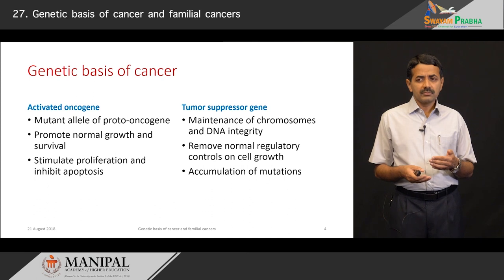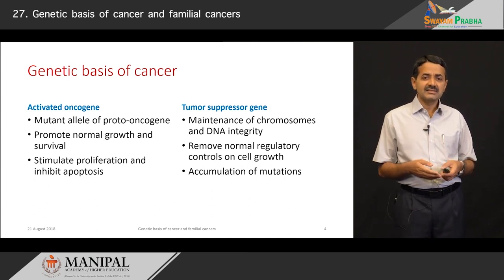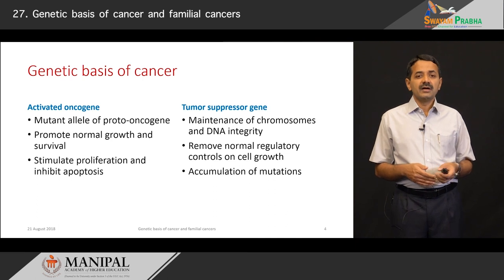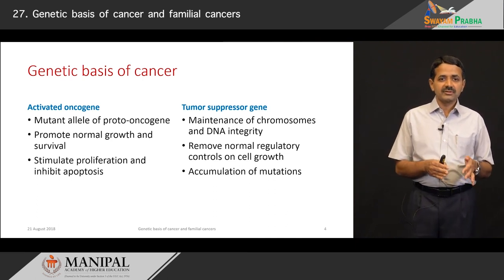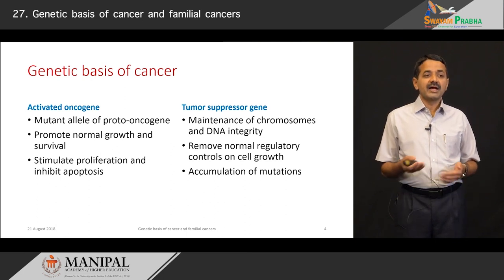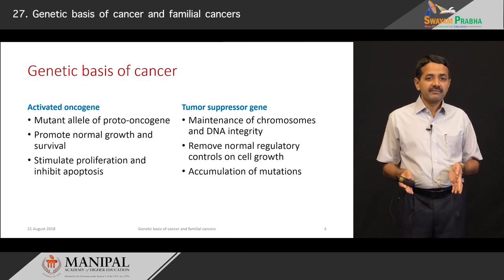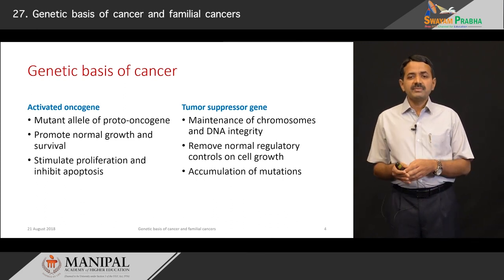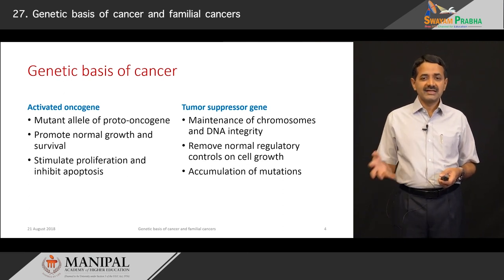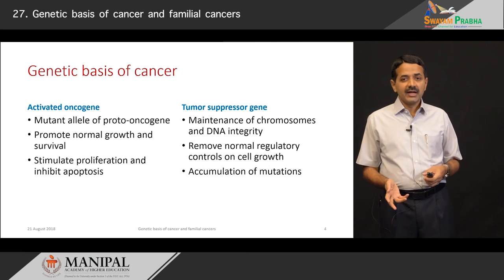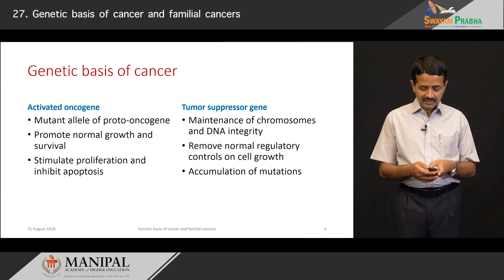Oncogenes are normal genes present in cells for normal growth and survival. When they get mutated they become proto-oncogenes, stimulating proliferation and inhibiting apoptosis in an uncontrolled manner. Normally growth refers to regulated proliferation, but in cancer we have unregulated proliferation and inhibited apoptosis, so a cell with a mutation in an activated oncogene becomes tumorous. The second group, tumor suppressor genes, are required for maintenance of chromosomes and DNA integrity. When mutated they remove normal regulatory controls on cell growth, and mutations accumulate leading to tumor development.